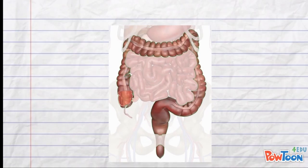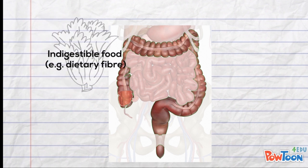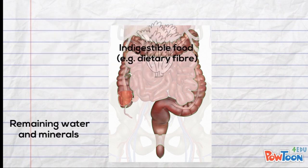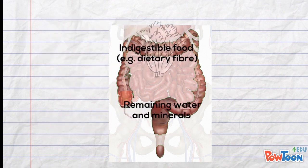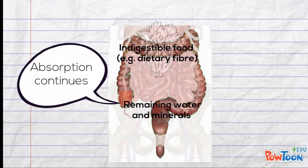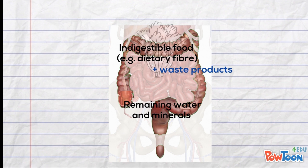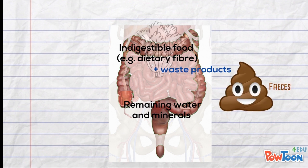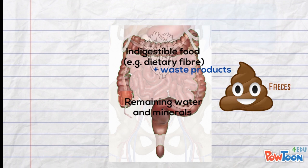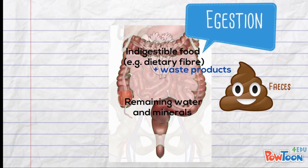The indigestible food, together with remaining water and minerals yet to be absorbed, is transported to the large intestine. Here, the absorption of water and minerals continues, while the indigestible food and other waste products are excreted out of the body as feces — which is the last step of the digestive process, ejection.